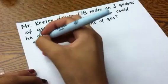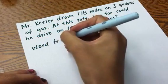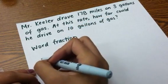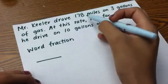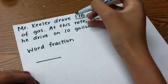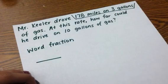So the first thing that I'm going to do is I'm going to set up my word fraction. What that means is I'm going to put the units first, and then I'm going to fill in my values. Right here, I have the phrase 178 miles on 3 gallons. To me, that's comparing two quantities, so I know that I can set up a ratio.